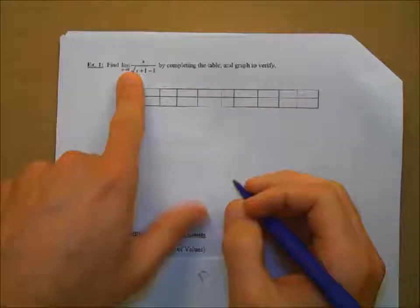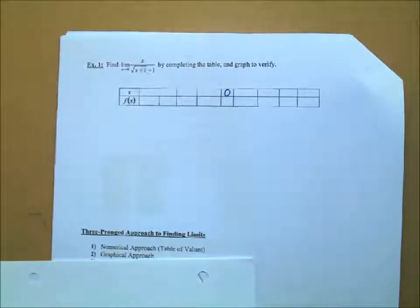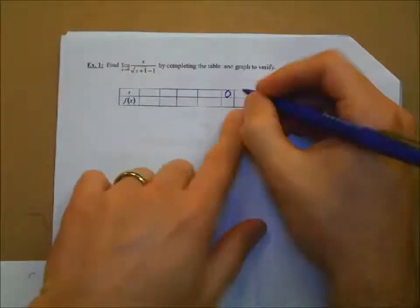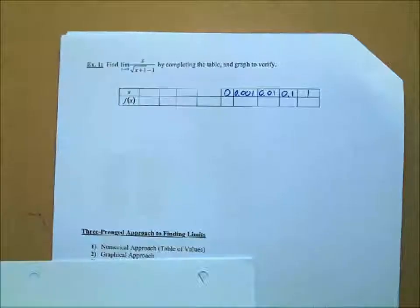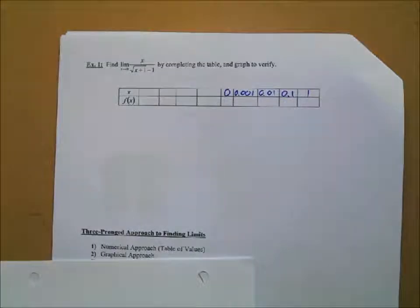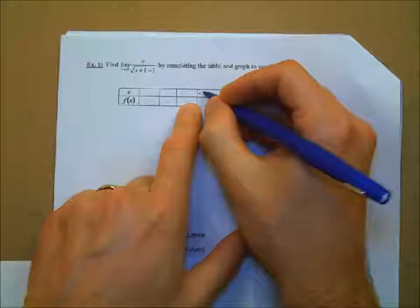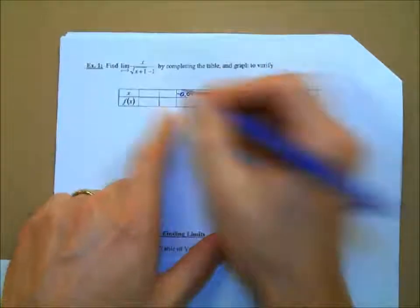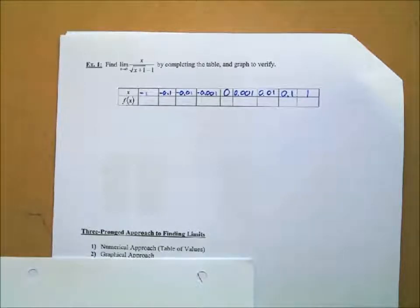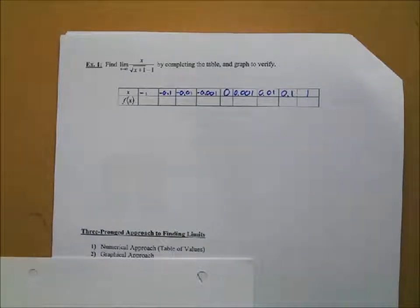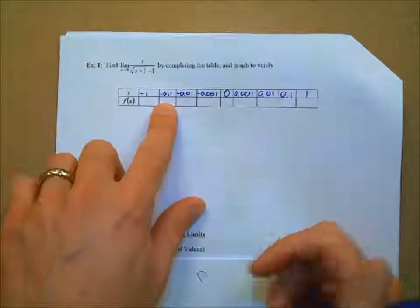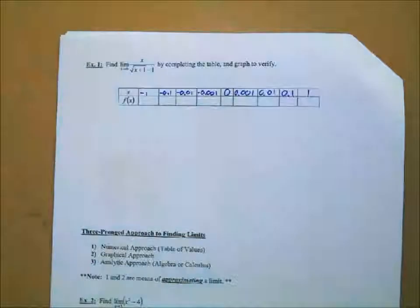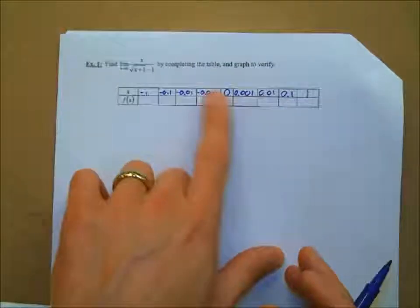We need to approach 0 from both sides. I'll put 0 in the middle. From the right: x = 0.001, 0.01, 0.1, 1. From the left, be careful with negatives: negative 0.001, negative 0.01, negative 0.1, negative 1. Make sure the numbers get closer and closer to 0 in the correct order — negative 1 is further, then negative 0.1 is closer, closer, closer.